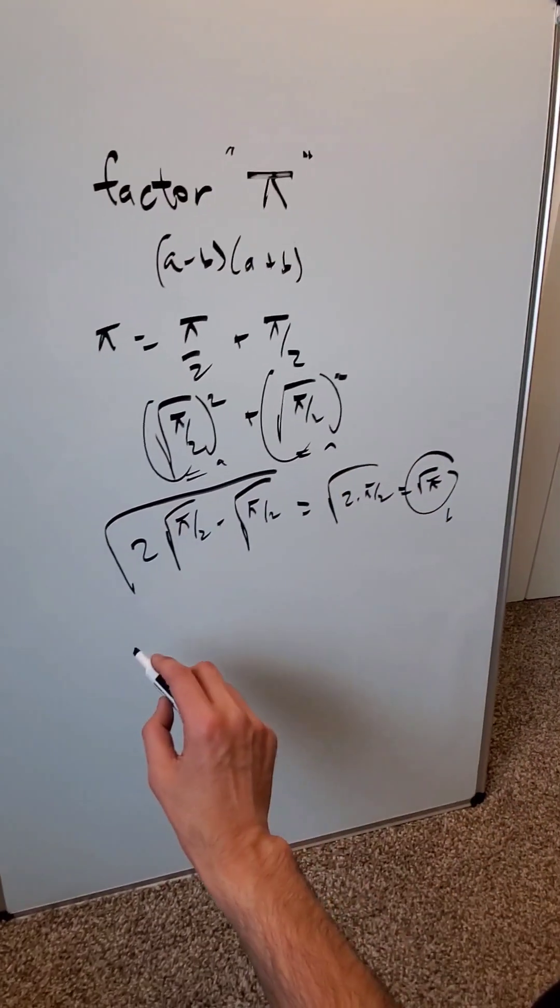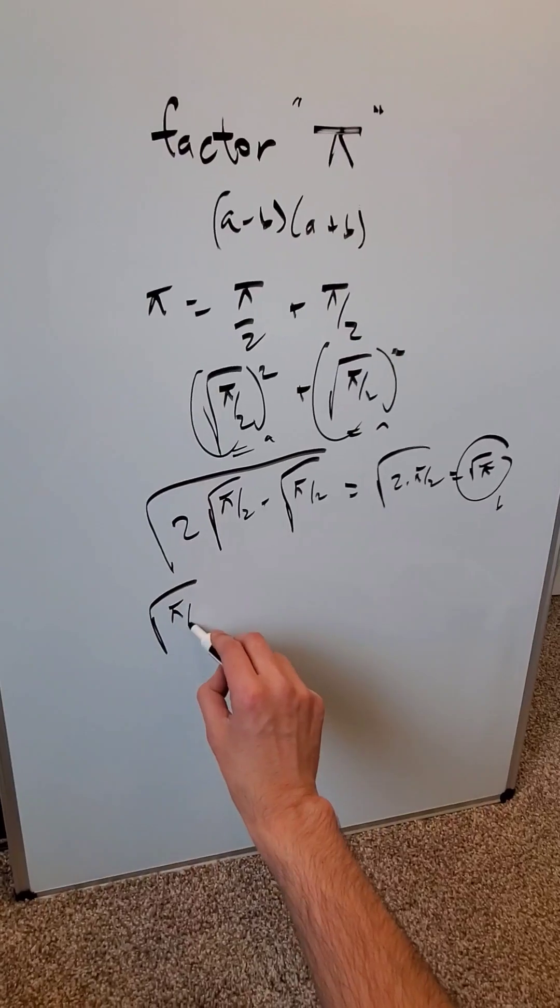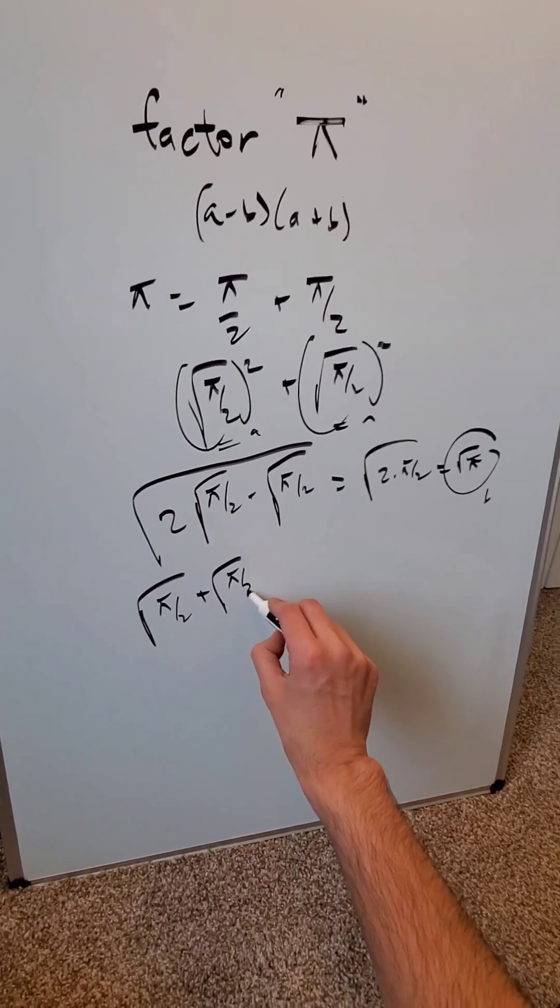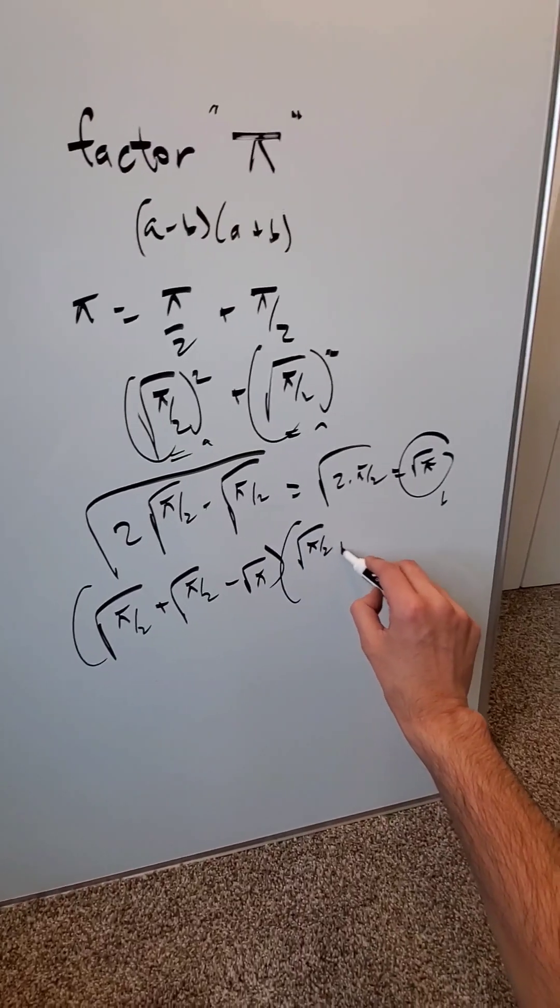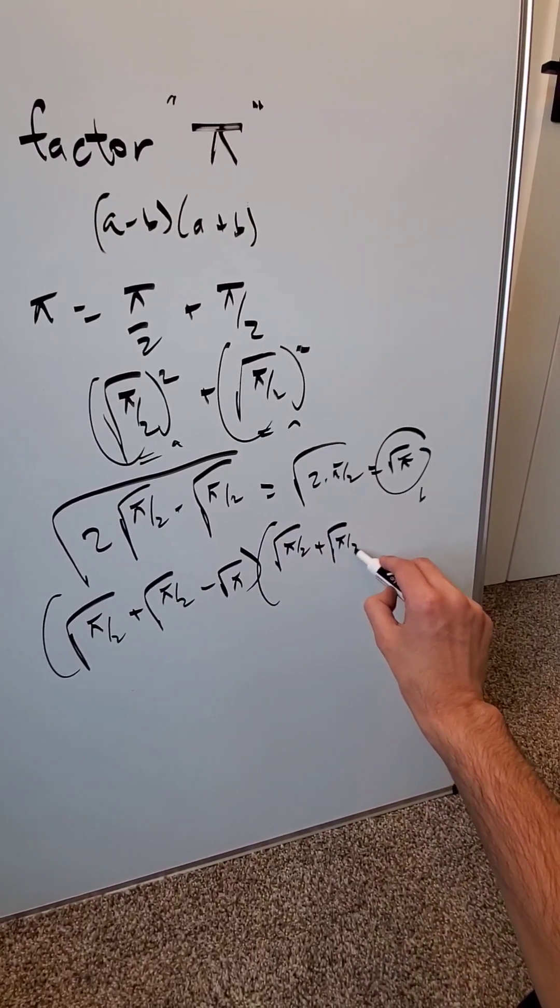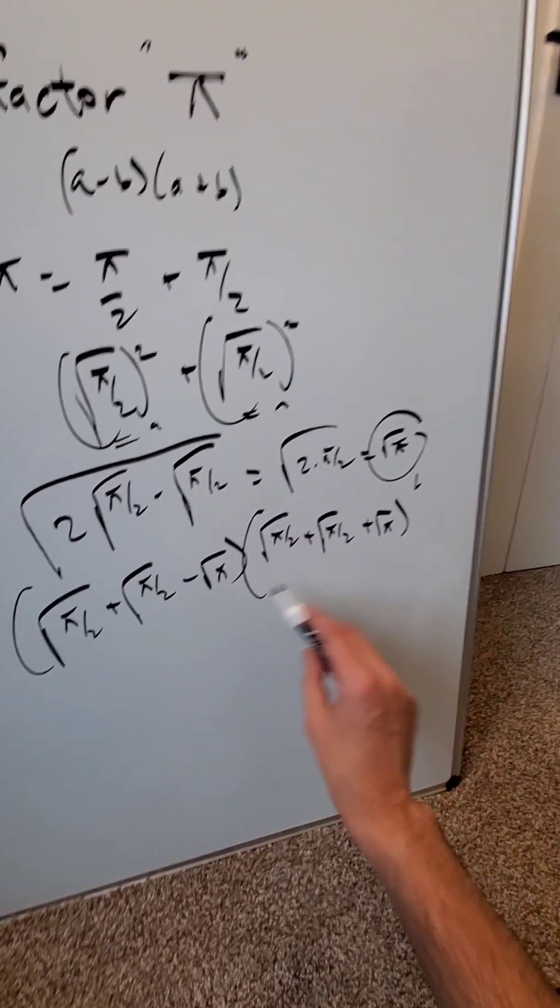Write them in the (a minus b)(a plus b) format. √(π/2) plus √(π/2) minus √π - here's my (a minus b). And then √(π/2) plus √(π/2) plus √π - here's your (a plus b).